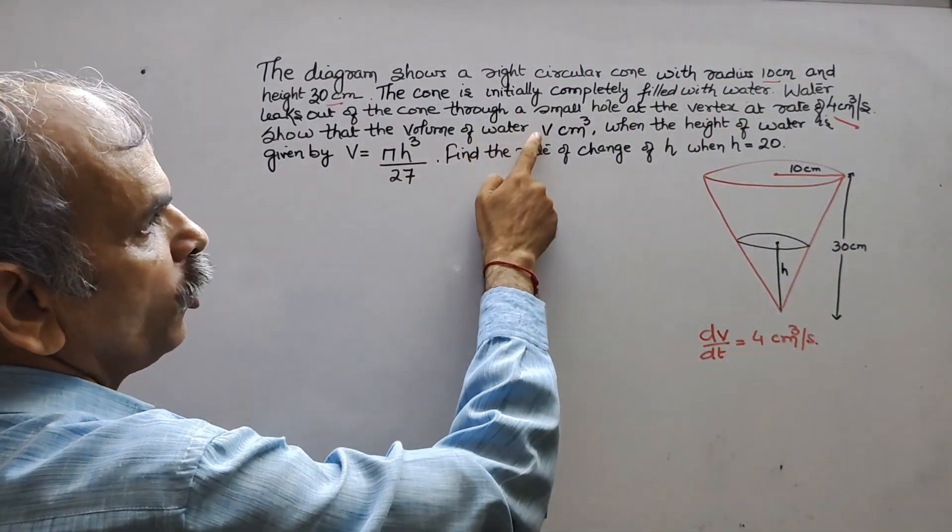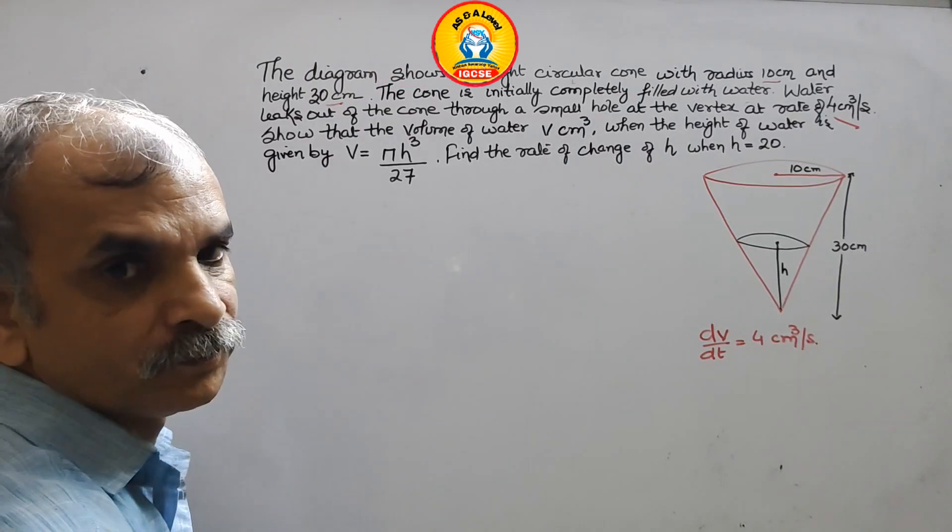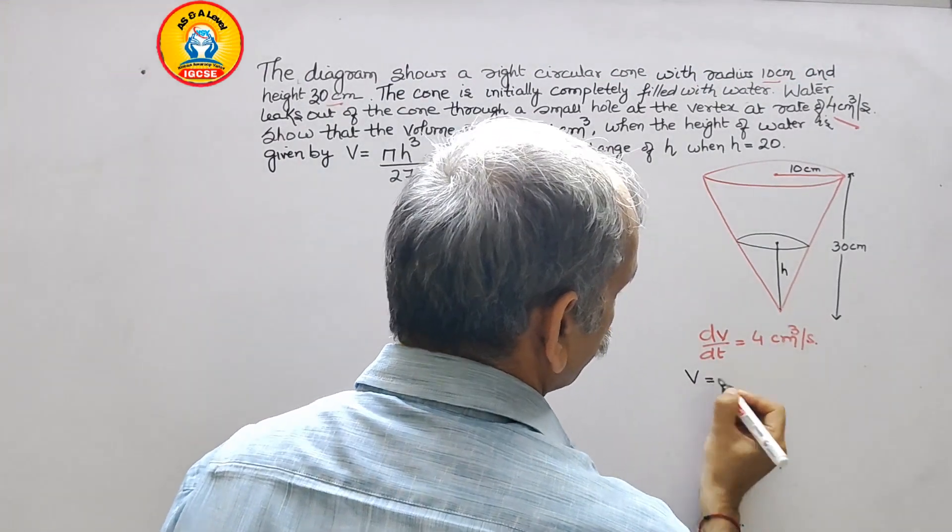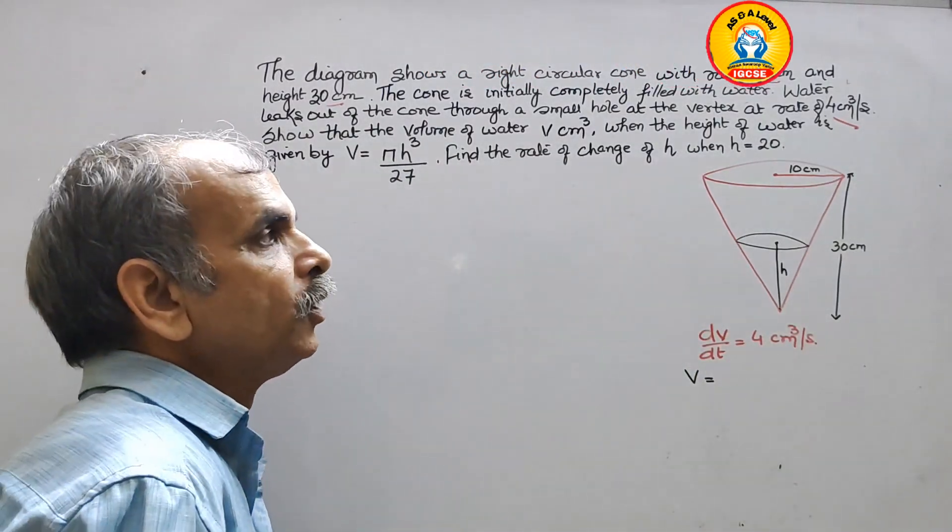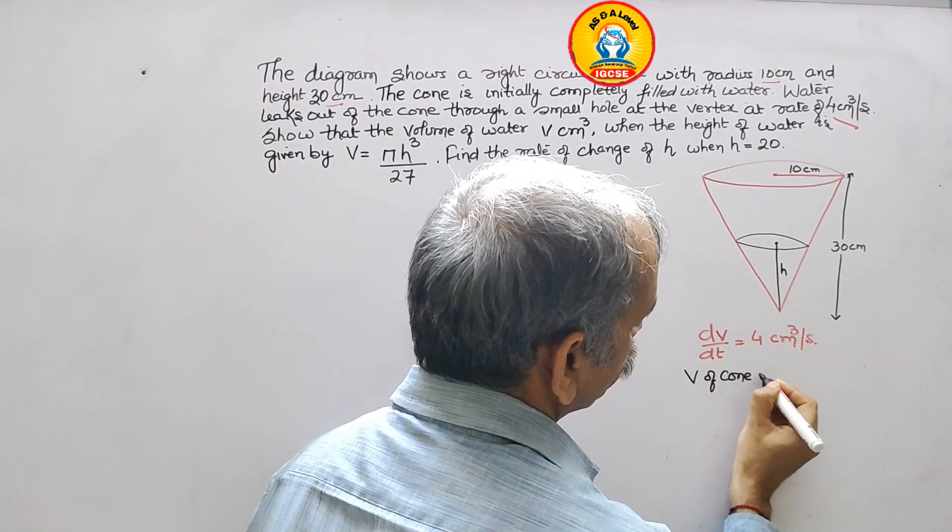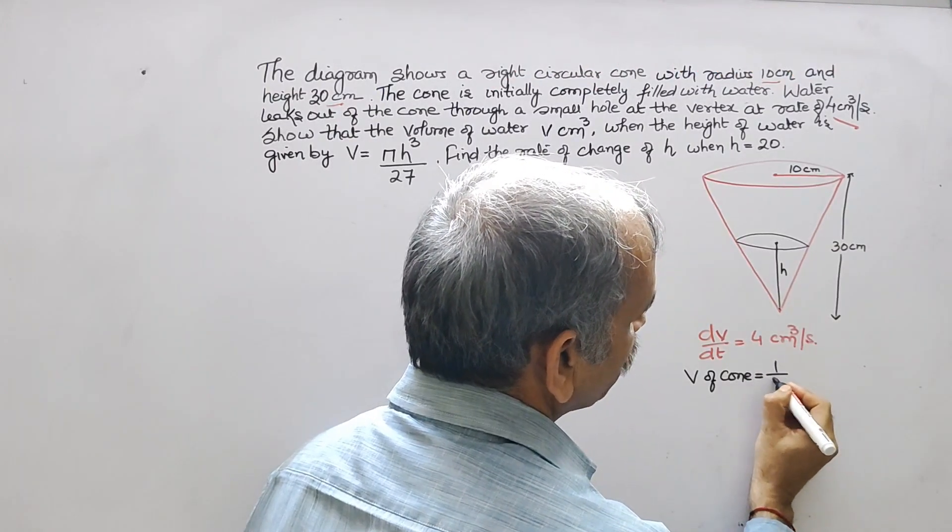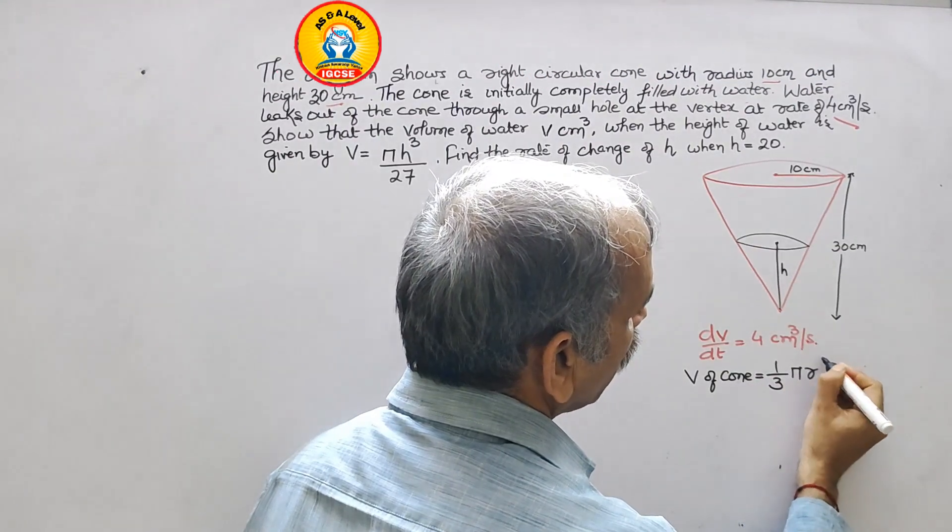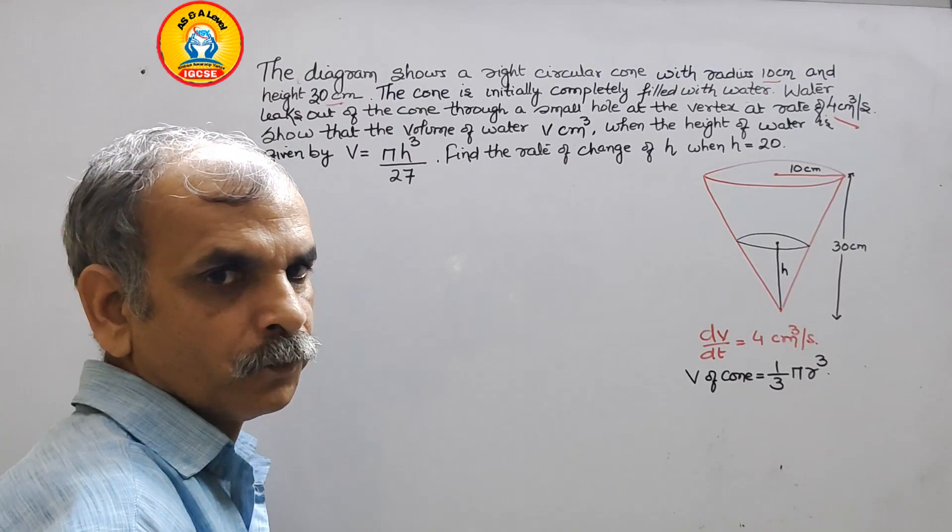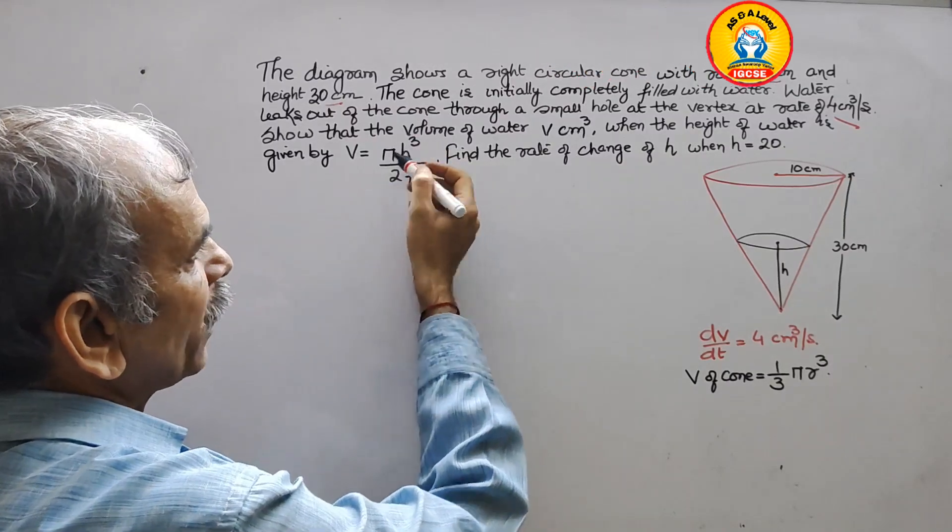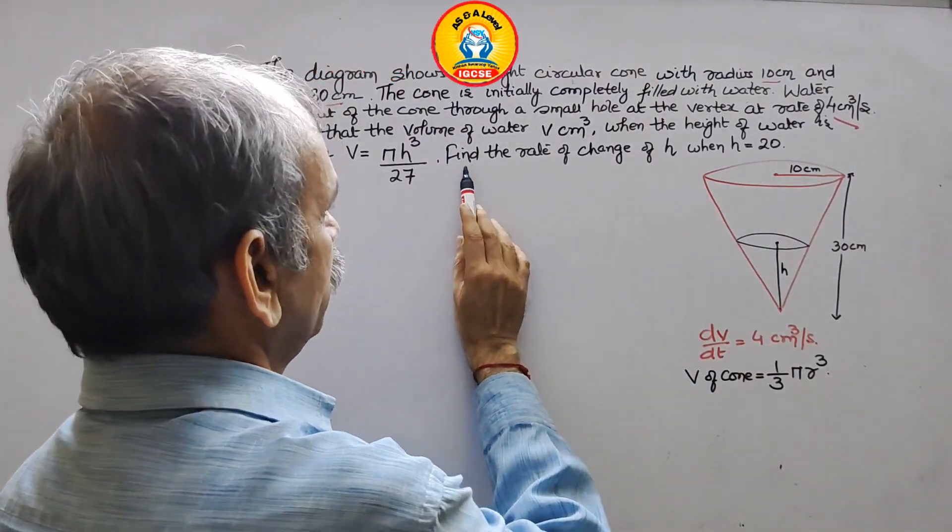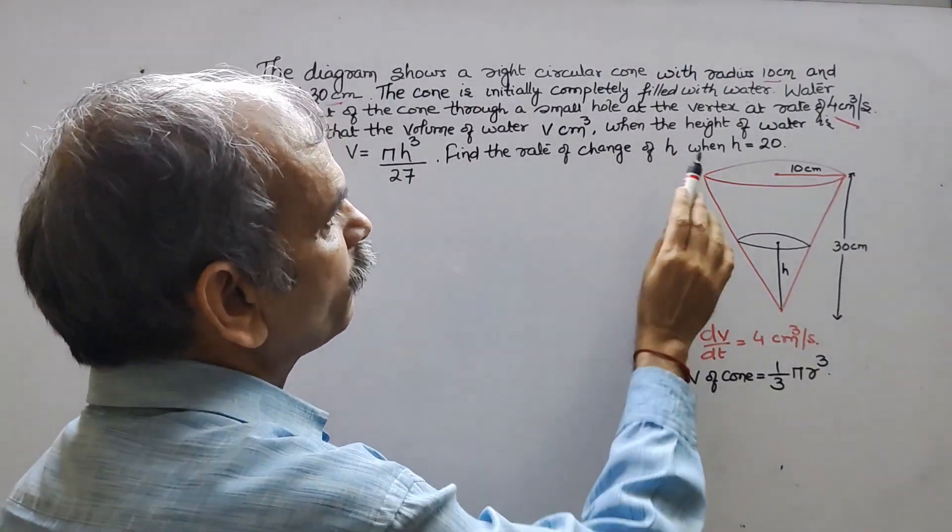Next, volume v, we have to show that this. So volume of cone is what? 1/3 πr²h. This is the volume formula. So we have to go with respect to h height and here volume, this only we have to find it out. How we will find it out?